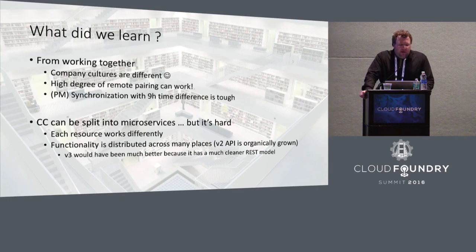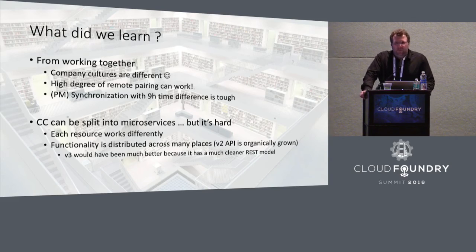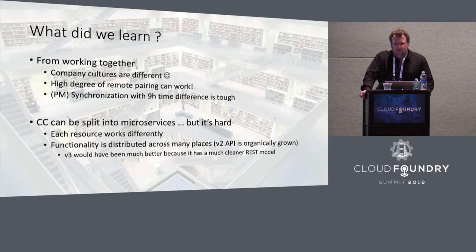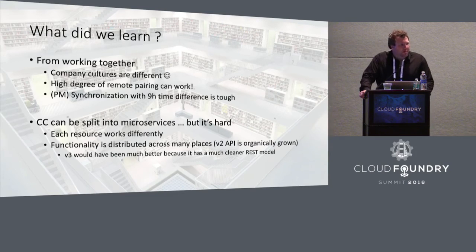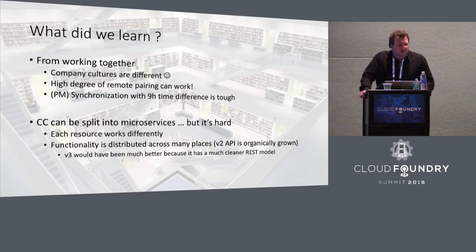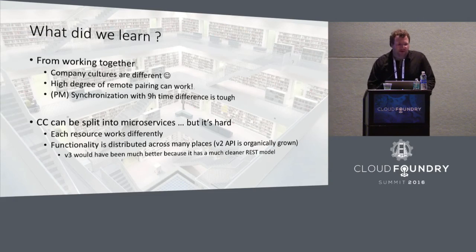Coming to the technical side of things: the main lesson we learned is you can split the Cloud Controller into microservices. That's the key takeaway from this work. It is hard though — it's not easy. First and foremost, each of the resources works differently. Particularly around the V2 API, the functionality is really distributed across many places because a lot of that stuff grew organically, and you have to rip out things where you don't expect to. We had a discussion in a retro that said if we had done this on V3 it would probably have been easier because it would have been a much cleaner REST model, but the fact was we needed to do it in V2, so we had to learn that the hard way.